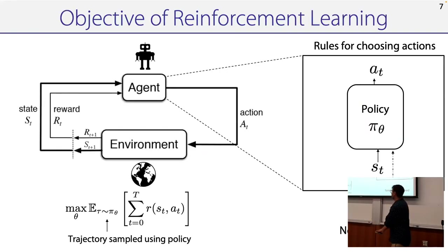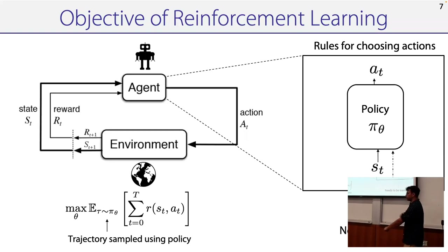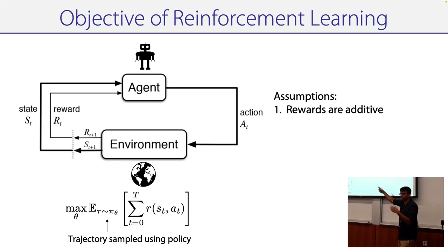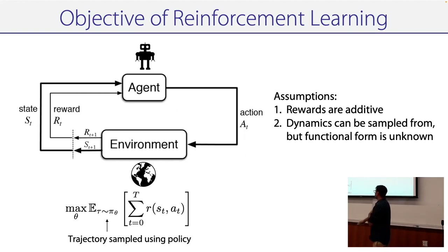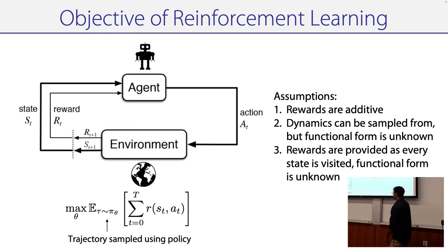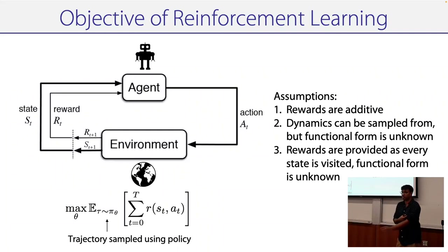The objective we're going to think about is maximizing the sum of rewards when your trajectory is sampled under your policy. The goal is to learn the parameters of your policy so that you maximize your sum of rewards. The assumptions here are that you want to maximize your sum of rewards, not your product or some other form. You can sample from the dynamics function but you don't know its functional form. Rewards are provided instantaneously when you visit a state, but you don't know its functional form. So you get a reward signal but you don't exactly know the reward — it can be non-differentiable, human-in-the-loop, anything.